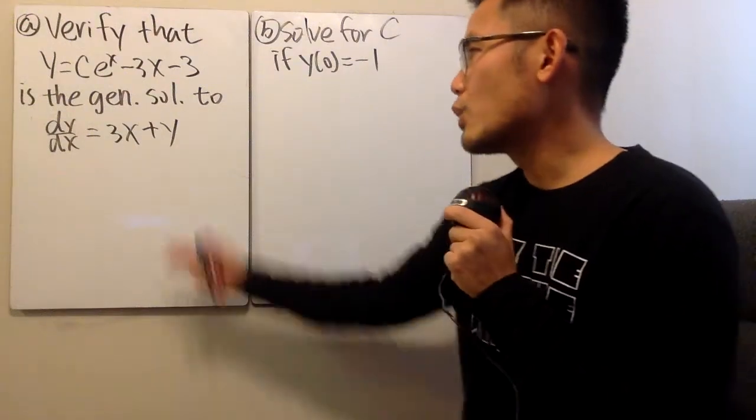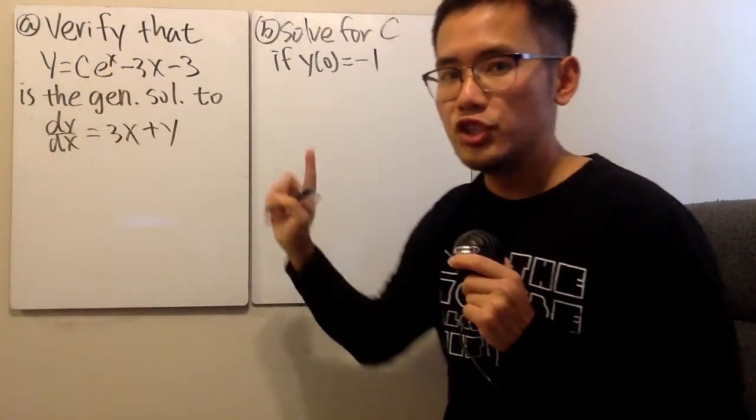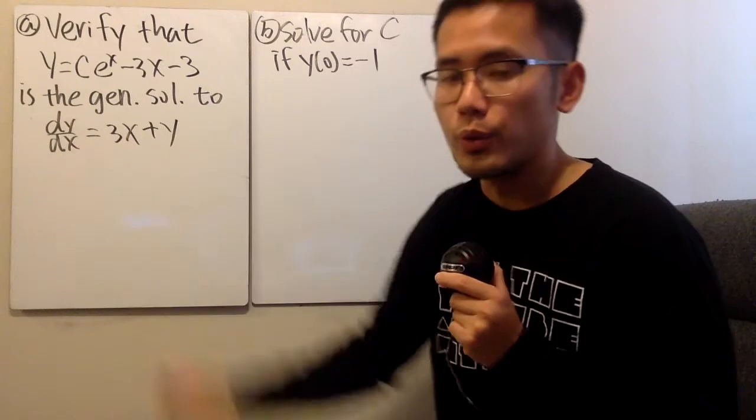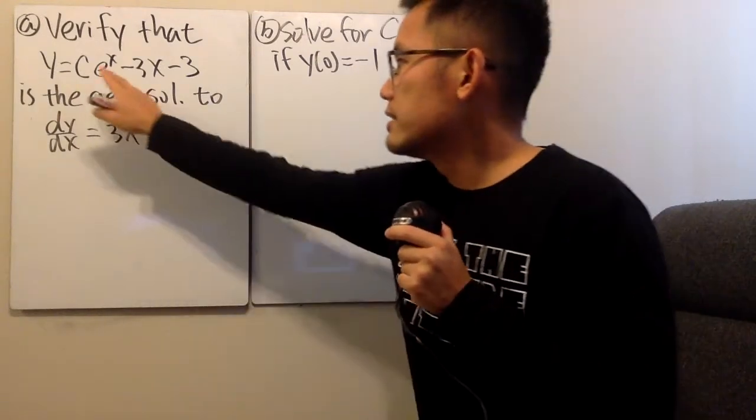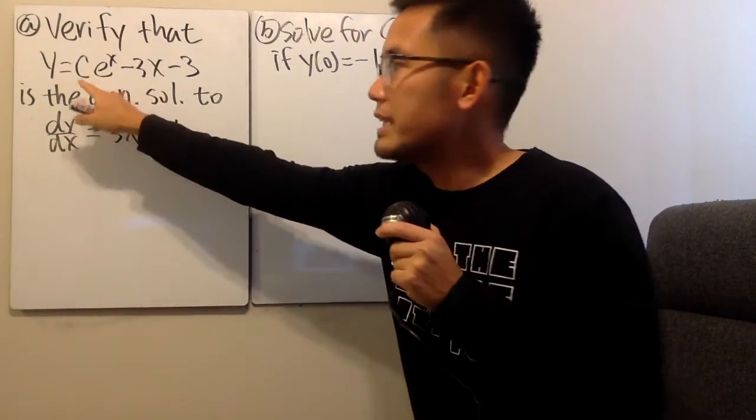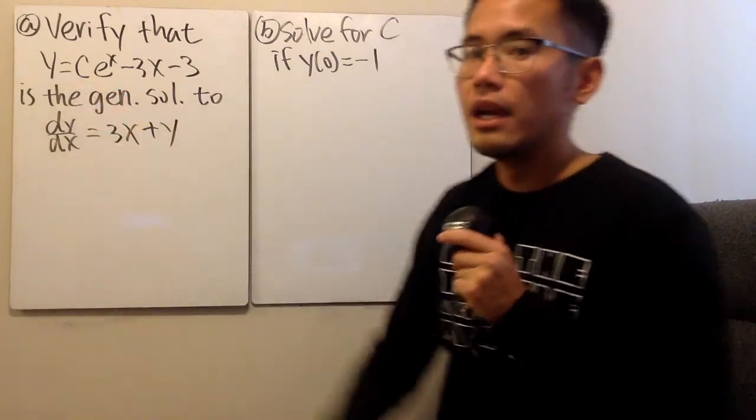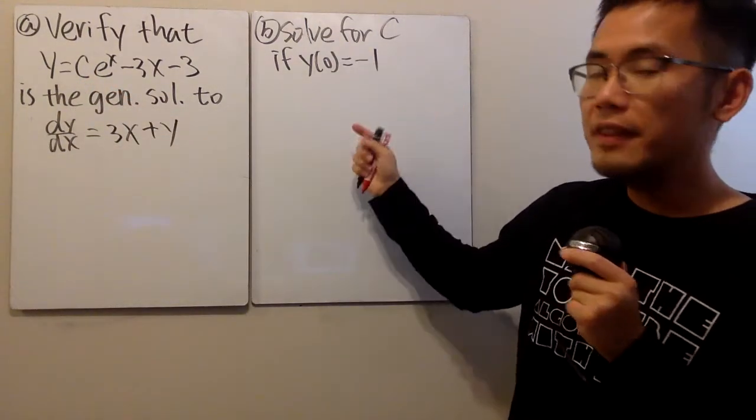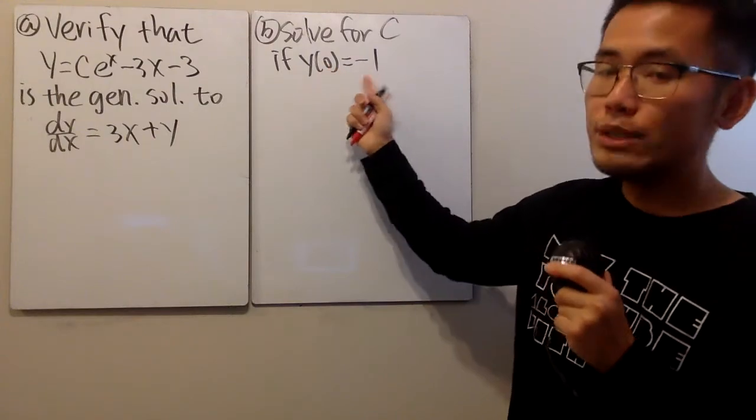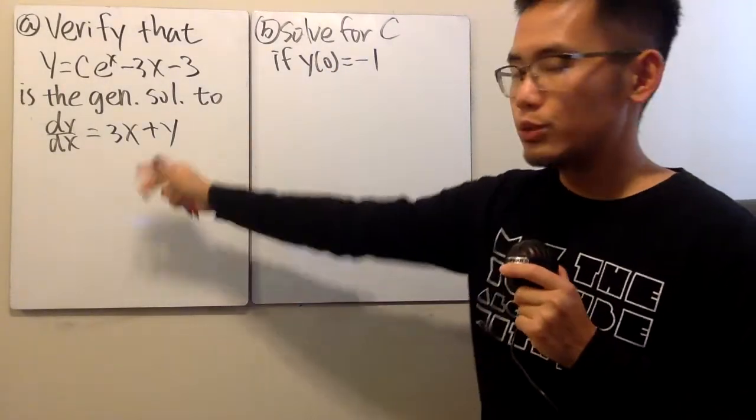All right, here's the question. First, we are going to verify that this right here is the general solution to this differential equation. And the reason that we are saying this is the general solution is because here we have the constant c. And then for the second part, we are going to solve for c, given that y of 0 is equal to negative 1. So let's do this part first.